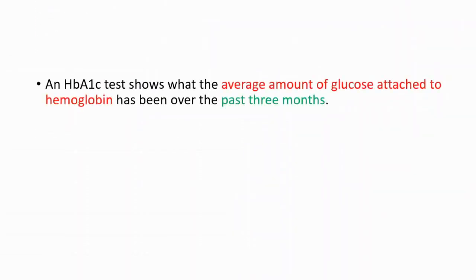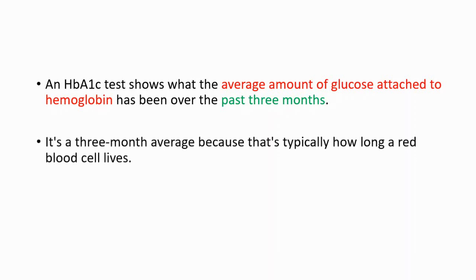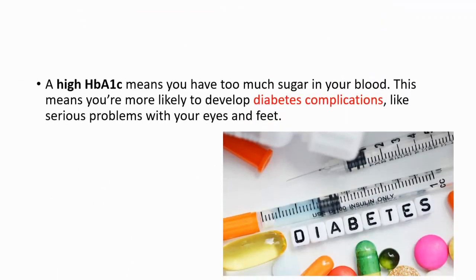This test shows what the average amount of glucose attached to hemoglobin has been over the past three months. Why three months? Because that is typically how long a red blood cell lives. A high hemoglobin A1C test means you are more likely to get diabetes complications, and at the end of the video I will share these complications, so stay tuned.